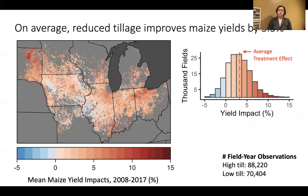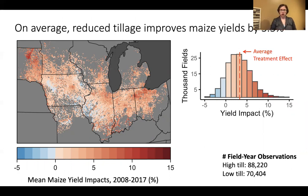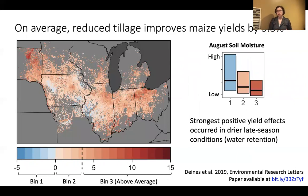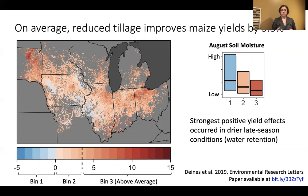We found that on average, reduced tillage improved maize yields in the region by 3.3%. There is some variability around this average treatment effect, including some areas with a negative effect and some with a strongly positive one, based on over 150,000 field-year observations. When compared with underlying environmental variation, one interesting result was that the strongest positive yield effects occurred in drier late-season conditions, consistent with how reduced tillage promotes soil health and improves water retention.